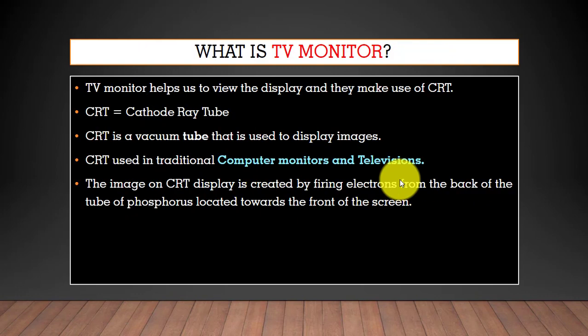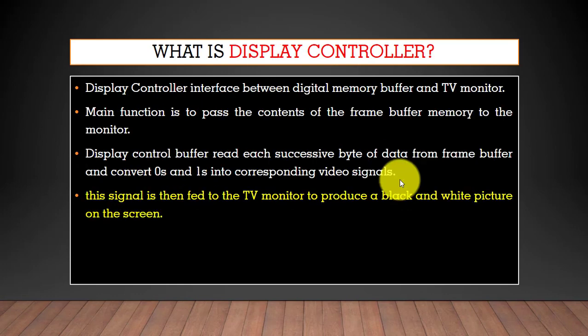We use a TV monitor to view the display. TV monitors make use of cathode ray tubes. A cathode ray tube is a vacuum tube used to display digital images, and it is used in traditional computer monitors and televisions. Cathode ray tubes display images by firing an electron gun from the back of the tube.